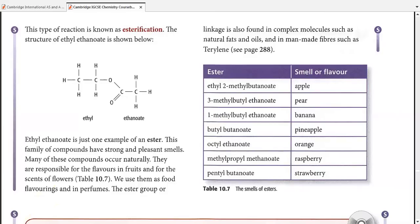This linkage is also found in complex molecules such as natural fats and oils, and man-made fibers such as Terylene. We are going to study this part in detail in chapter 11.